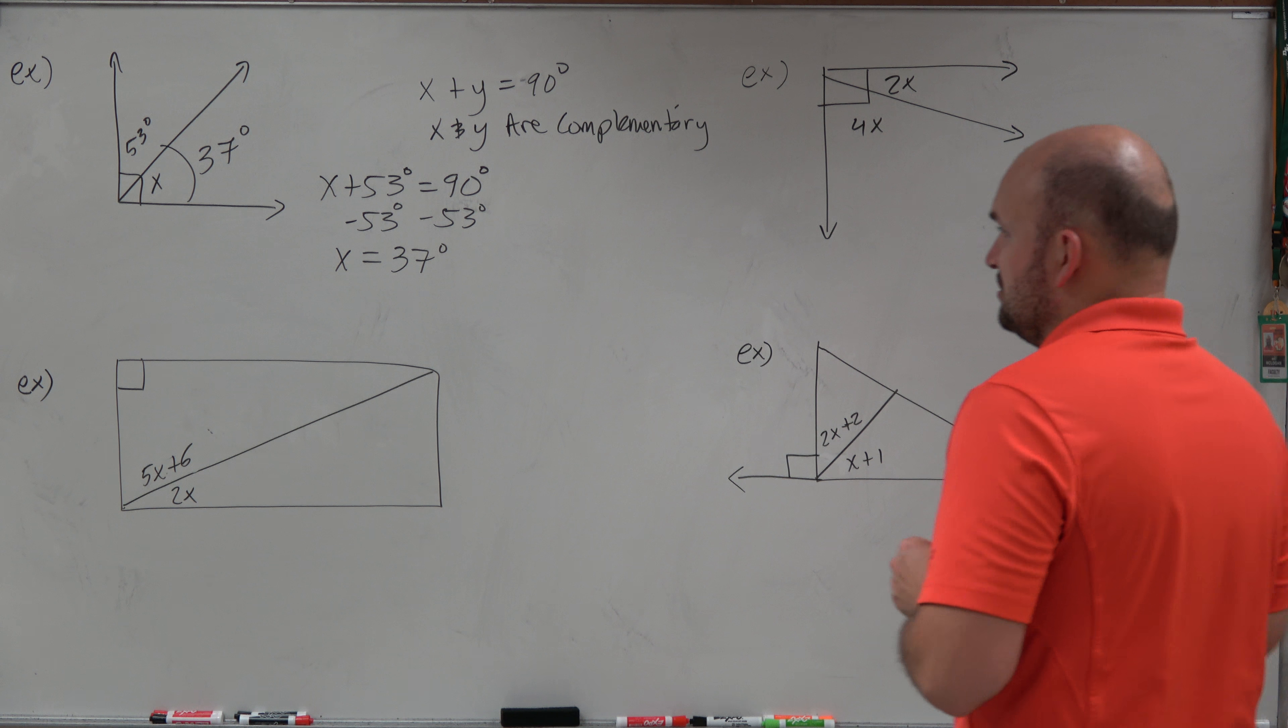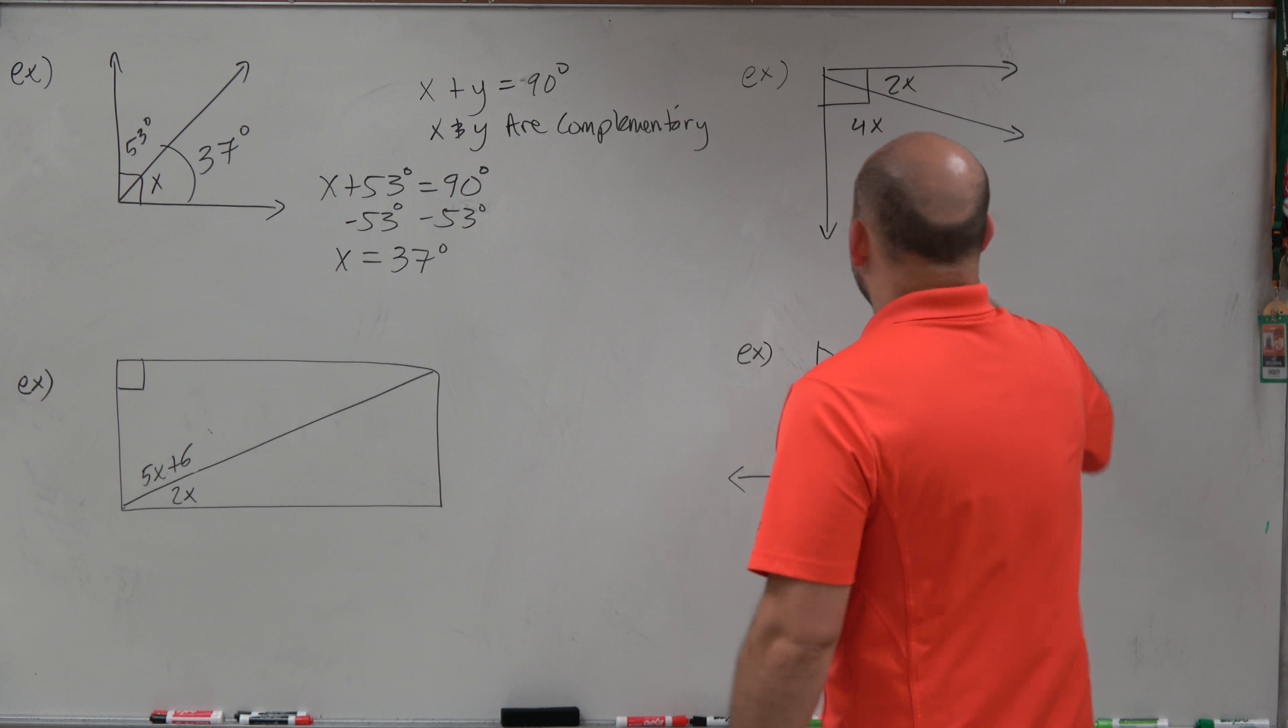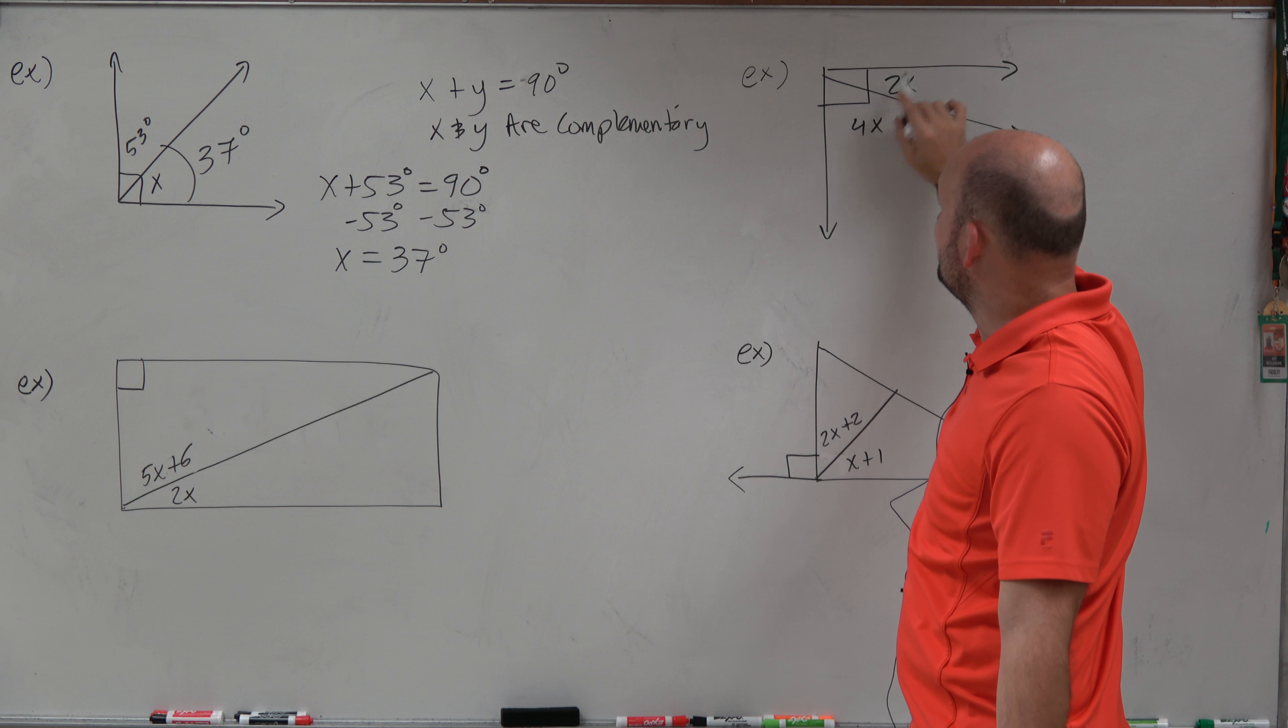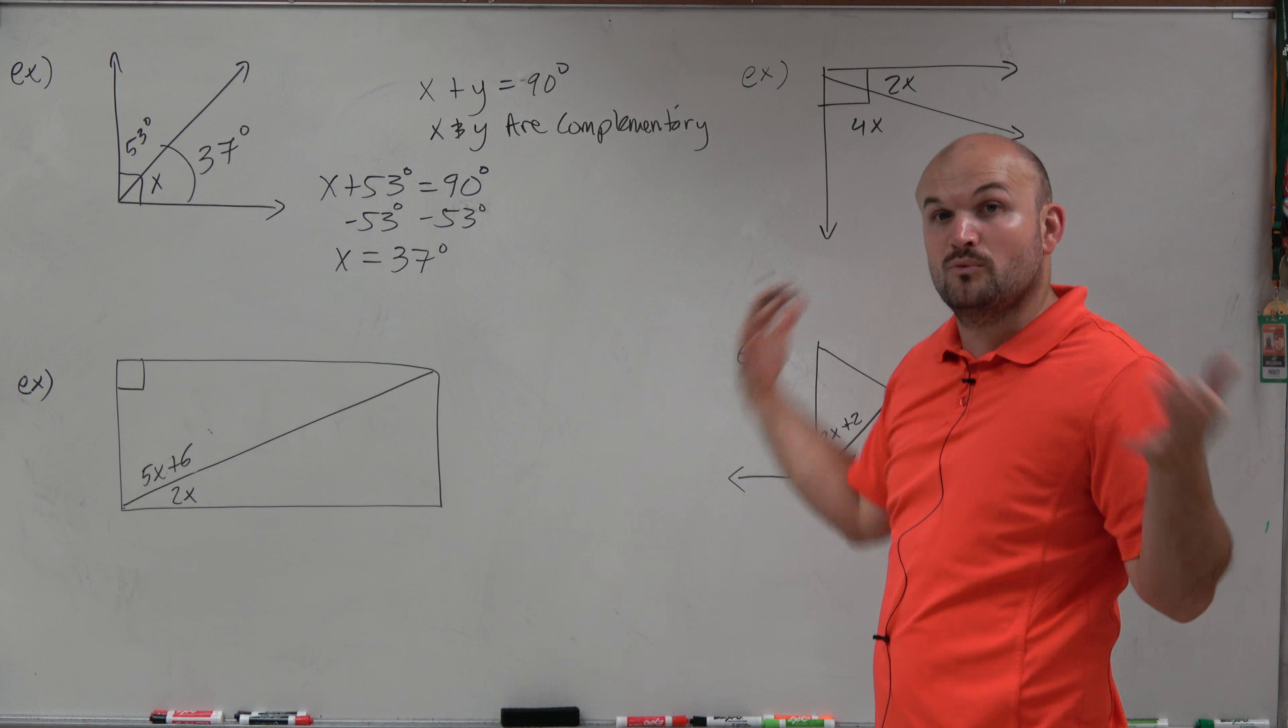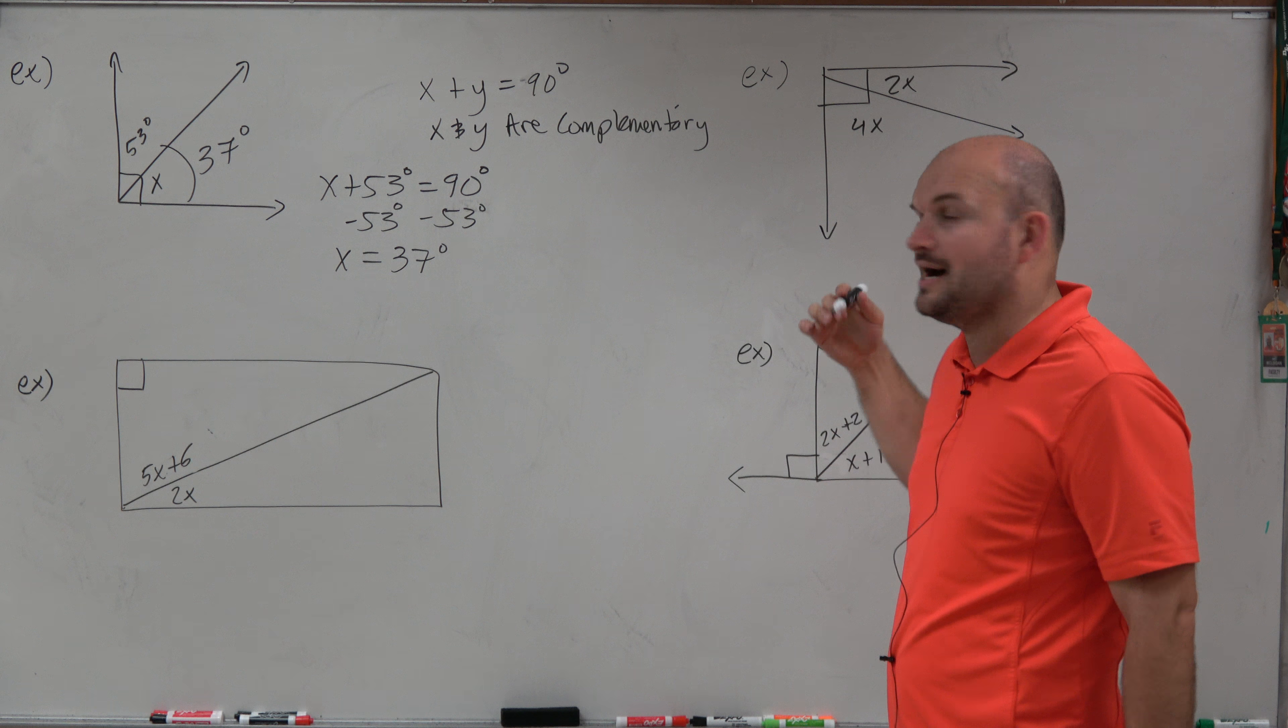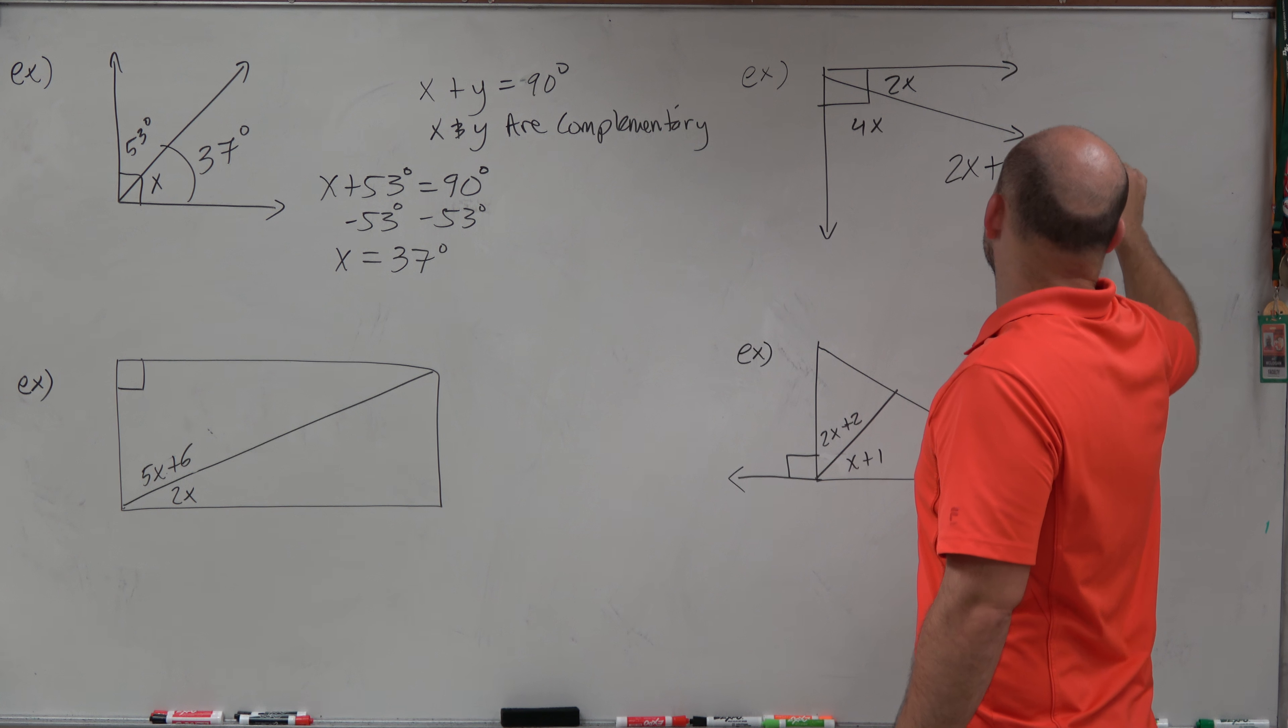Over in the next one here, you can see a similar thing, but now we have another couple expressions. So now we don't know the measure of either of the angles. But I do know that these two angles add up to make a 90 degree angle. Therefore, I will say that 2x plus 4x is equal to 90 degrees.